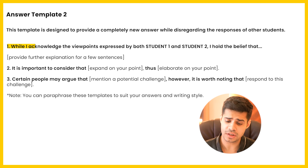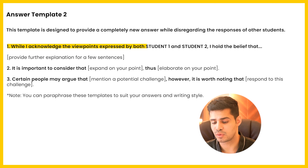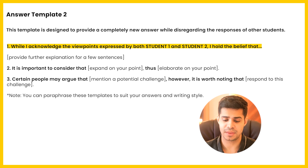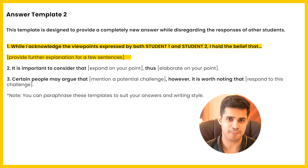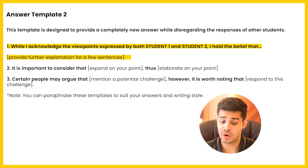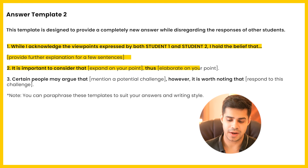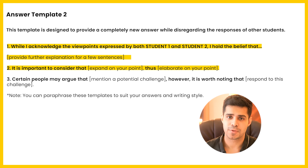There may be certain situations when you feel that none of the students are saying the right thing — my opinion is something different. This is the template for that. You begin by saying: 'While I acknowledge the viewpoints expressed by both Student A and Student B, I hold the belief that...' and then you explain what you think should be the right answer. Then you say: 'It is important to consider that...' and expand on your point with more reasons. Then: 'Thus, this is the point that I want to make.'